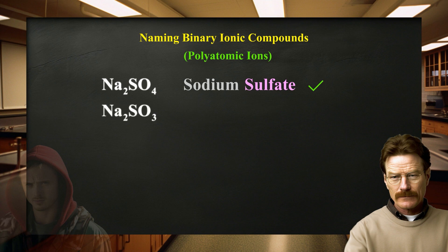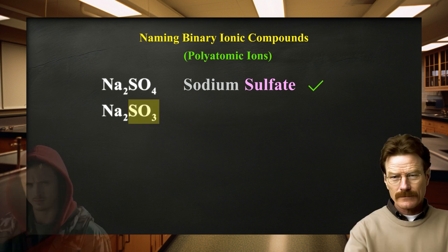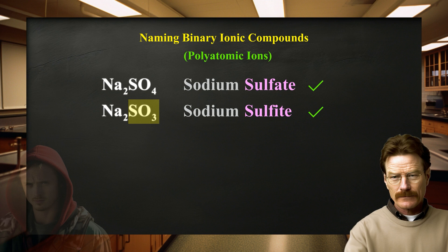Now try this one. — This looks very similar to the last problem, Mr. White. This one has one less oxygen. — That is correct. Remember that we use the ending -ate for the largest number of oxygens and -ite for the smallest number of oxygens. — So this compound is called sodium sulfite? — That is correct, Jesse. Use the number of oxygens to determine the ending of the polyatomic ion.